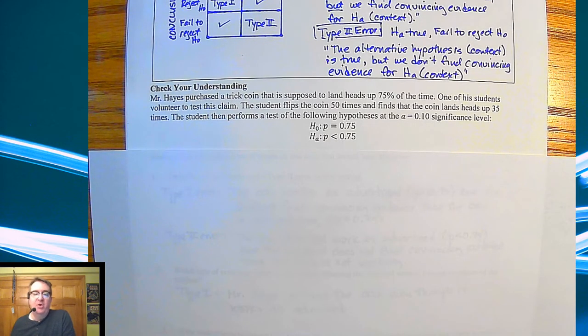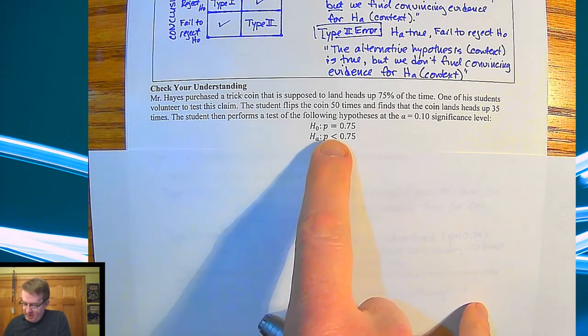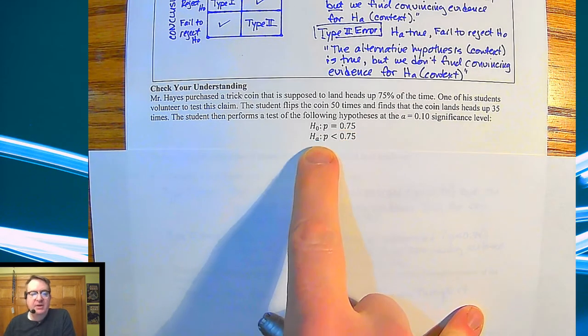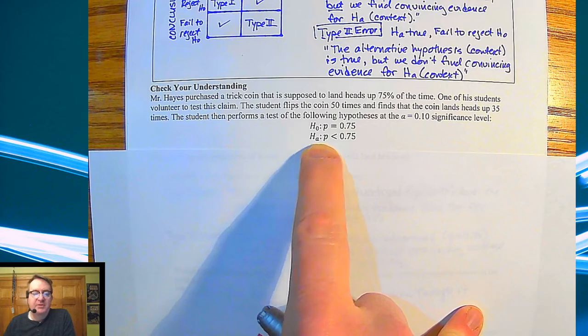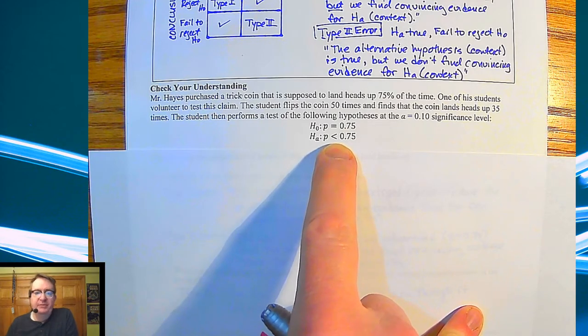So Mr. Hayes purchased a trick coin that's supposed to land heads up 75% of the time. One of his students volunteers to test the claim. The student flips the coin 50 times, finds the coin lands up heads up 35 times. The student then performs the hypothesis test at an alpha value of 0.10 significance level. Null hypothesis: the coin is fine. The alternative hypothesis is that it doesn't work.